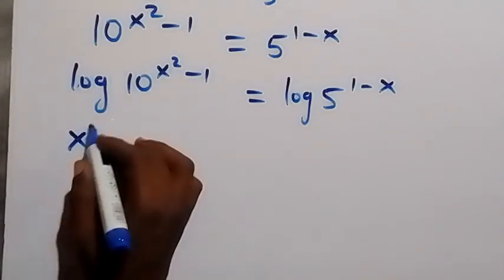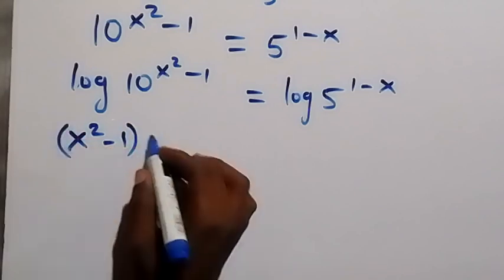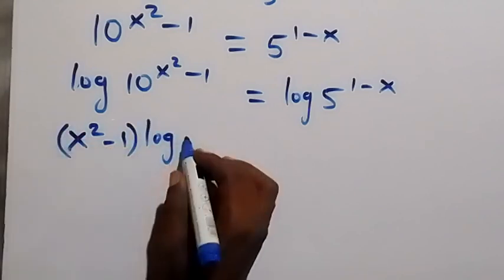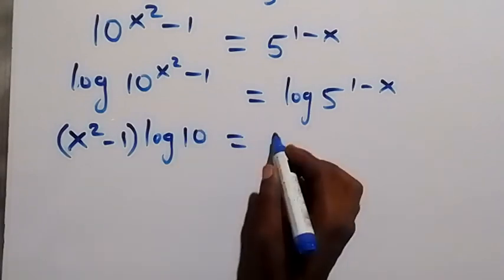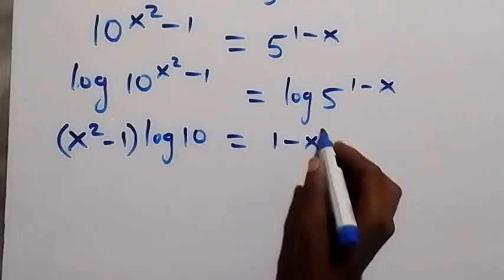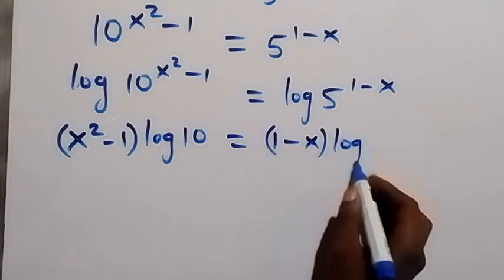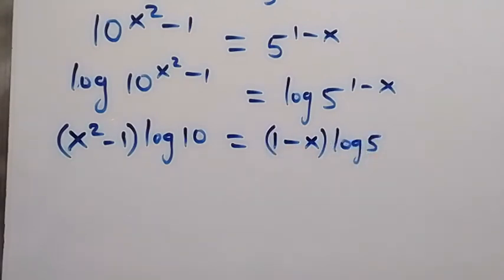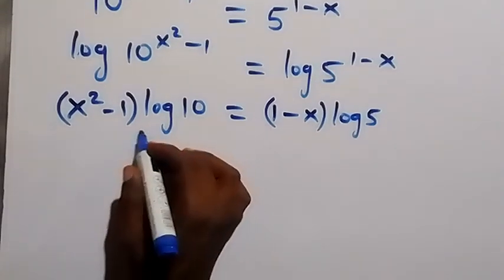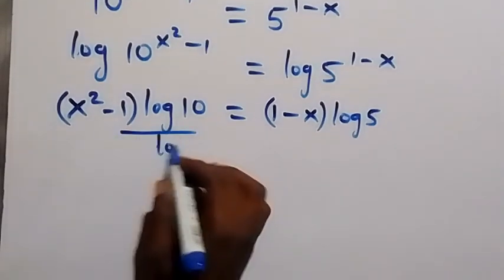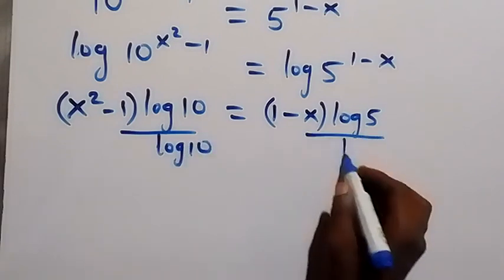This becomes: x squared minus 1, times log 10, equals 1 minus x, times log 5. In the next step, divide both sides by log 10 — divide this side by log 10 and also divide that side by log 10.